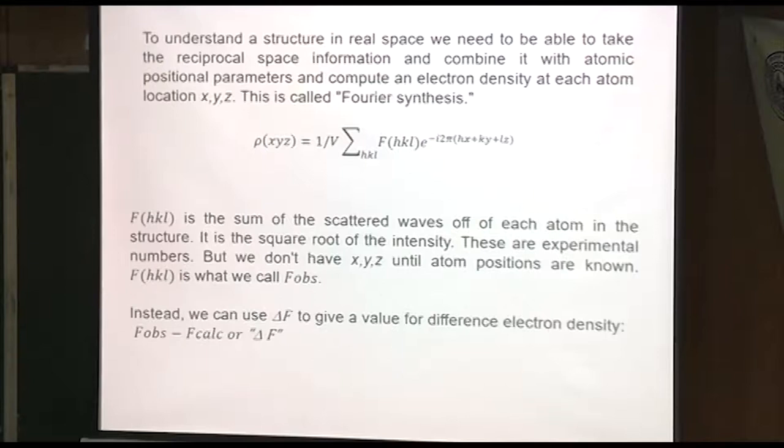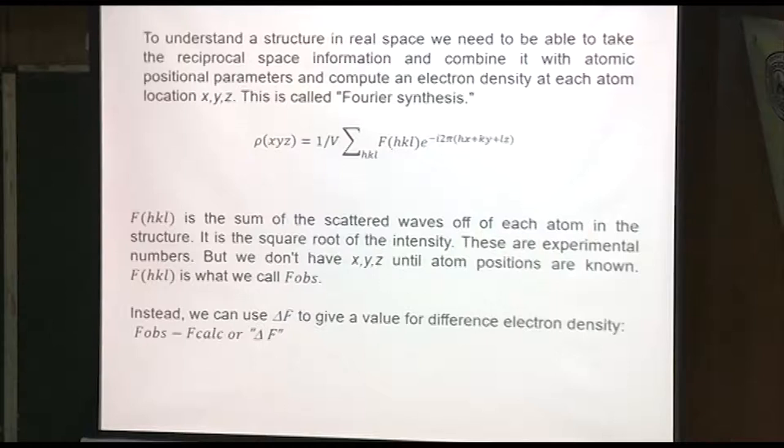Until you have at least one atom and you know the x, y, z position for that atom, you can't see any electron density. If you can have an atom that's strongly diffracting, like one with a lot of electrons, a heavy atom, you can get started and calculate the electron density. Then you can use a difference map to see the remainder.